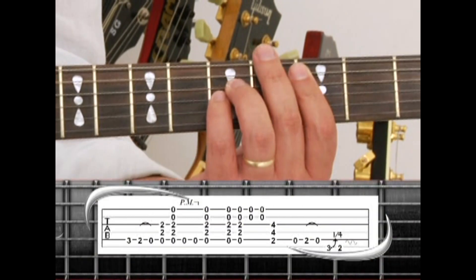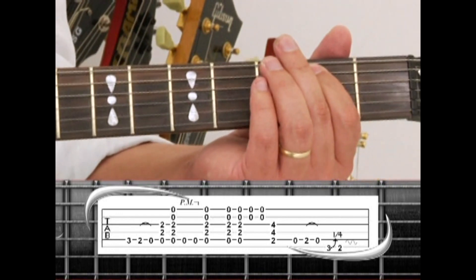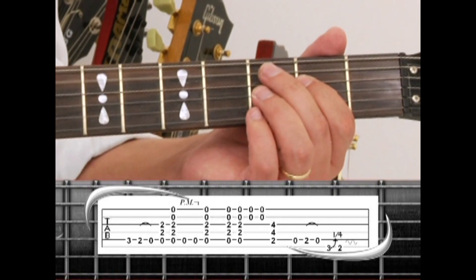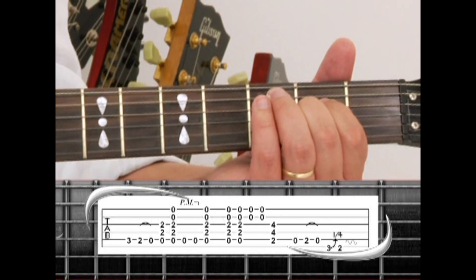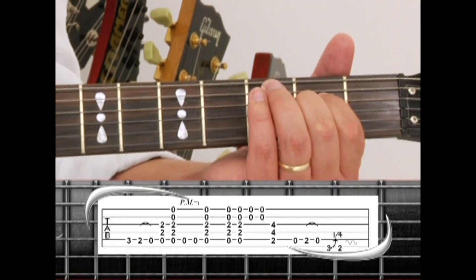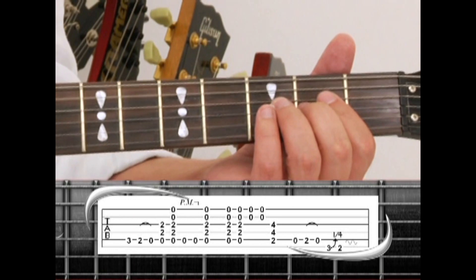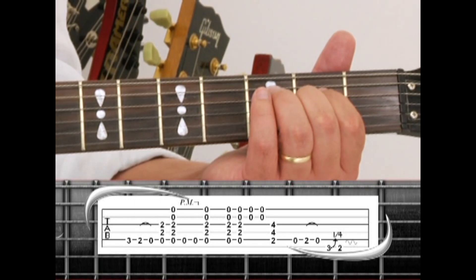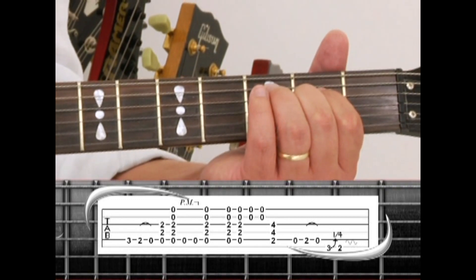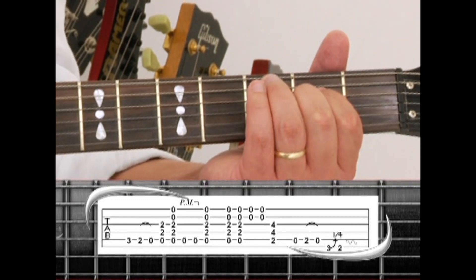To 5th string 3, 2, pull to open. Strum, then play A5. A5 drone. 2 palm muted open A bass notes. Strum A5 drone. Pause and strum twice. Then strum only the 1st and 2nd strings twice.